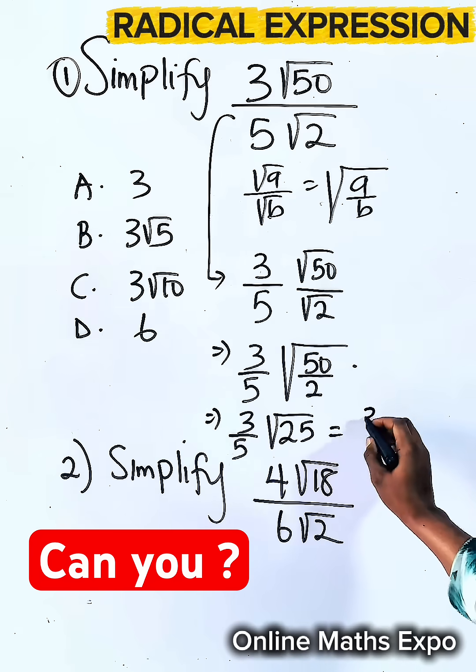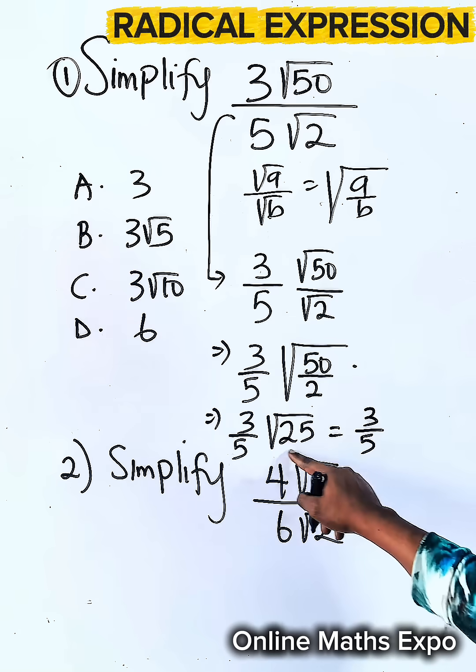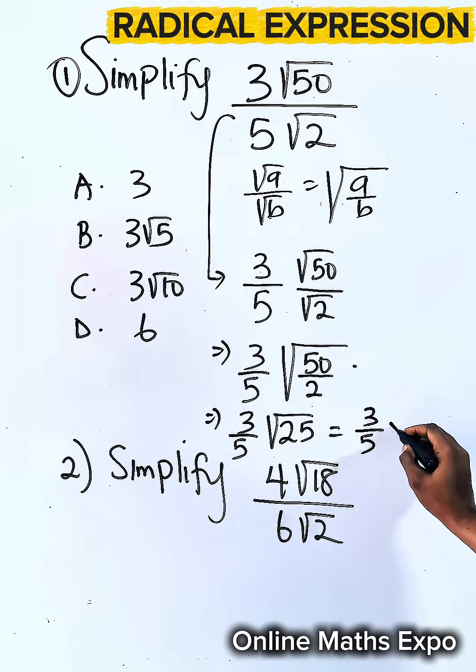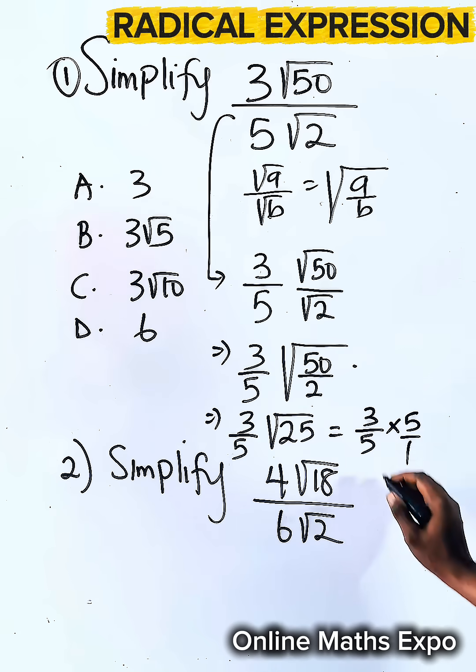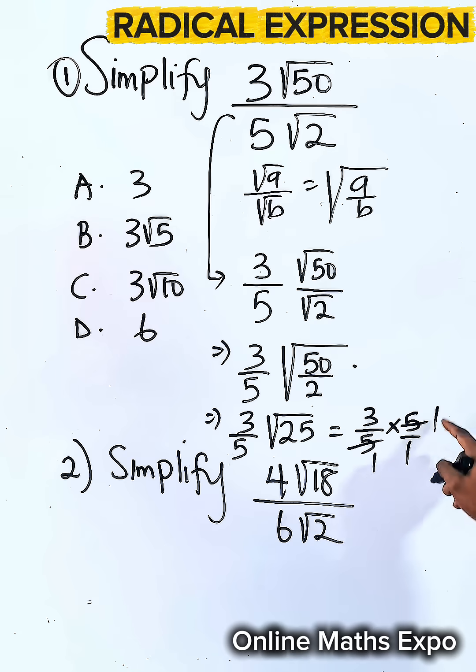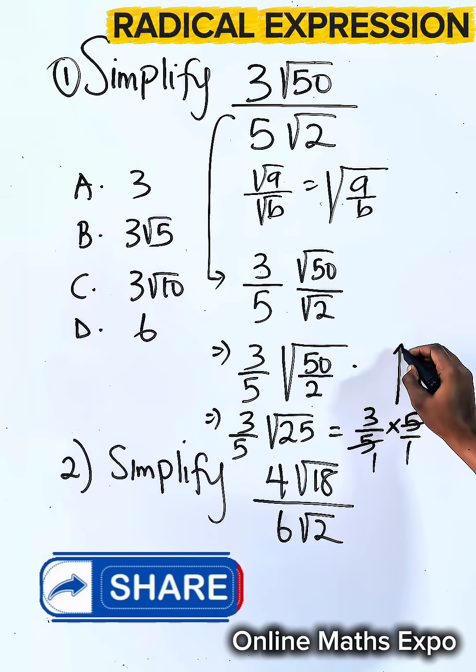And this gives us 3 on 5. Square root of 25 is 5. So we are multiplying by 5 over 1. 5 here is 1, 5 here is 1. 1 times 3 gives us 3. So our answer is 3, and that is option A.